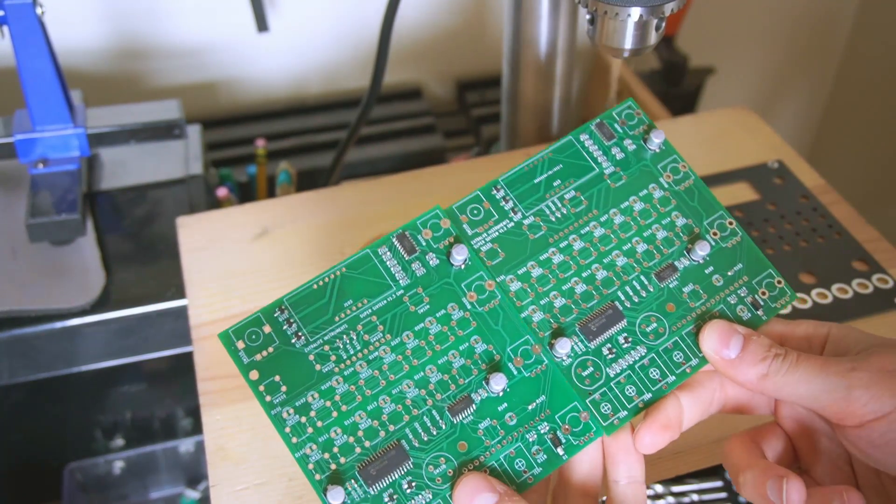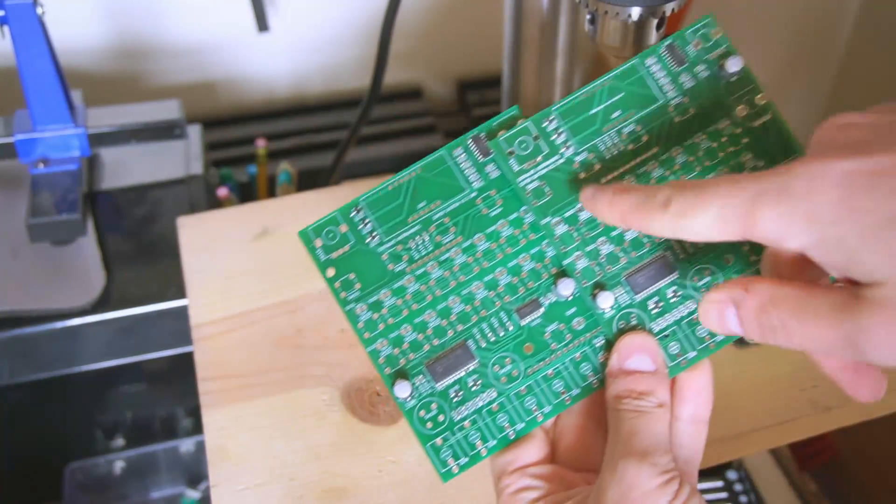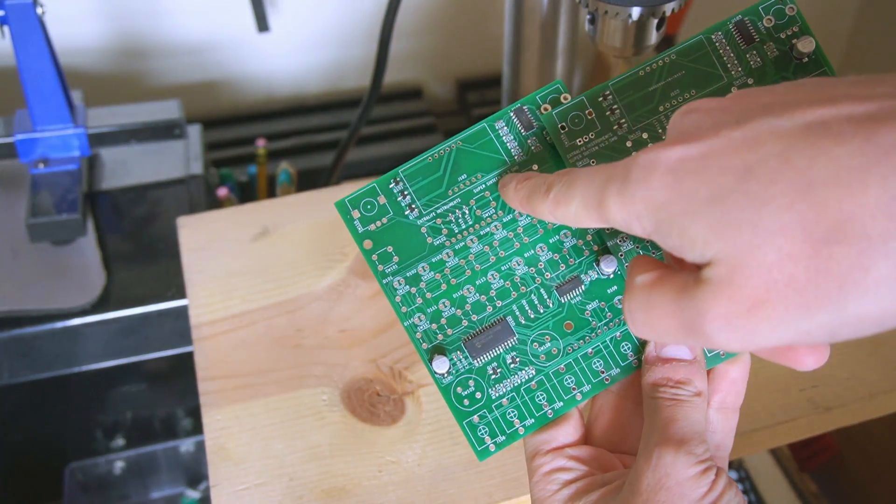Can you spot the difference between these PCBs? This one is the new one. You can tell because this says version 1.2, version 1.3.